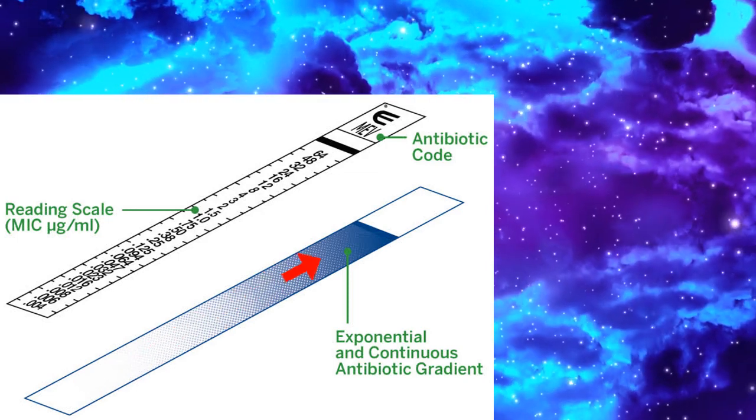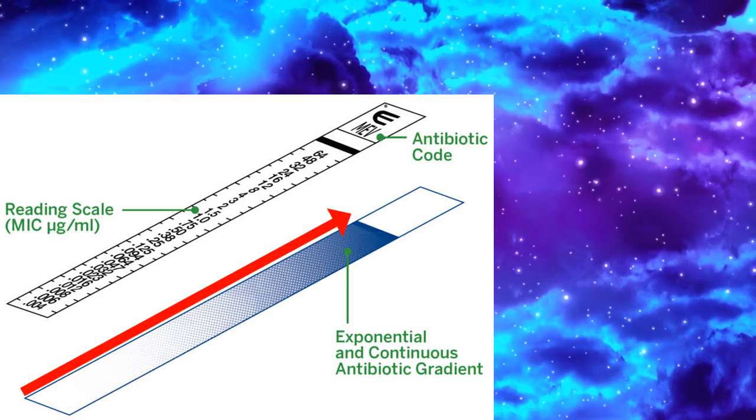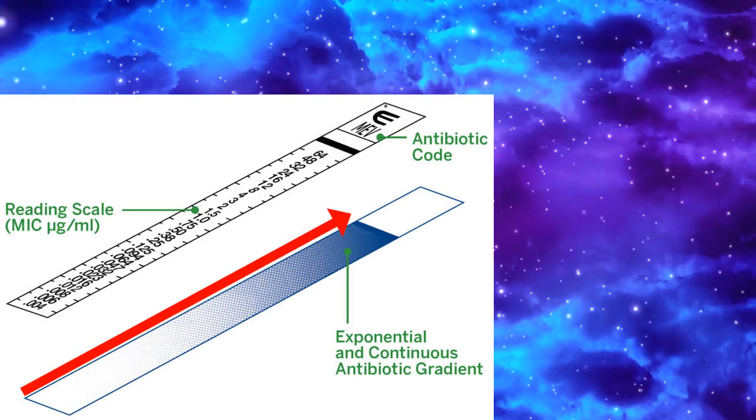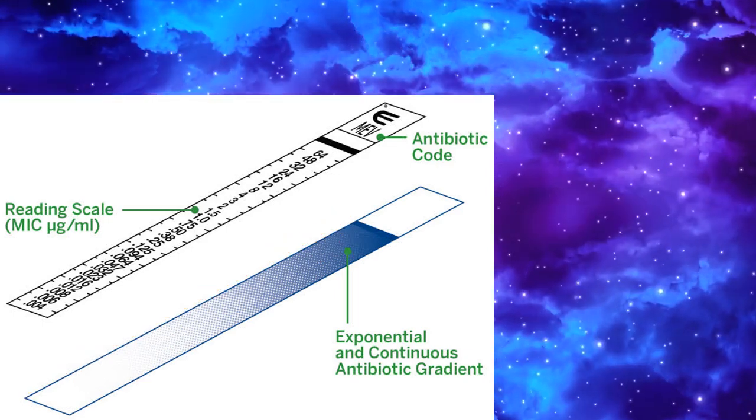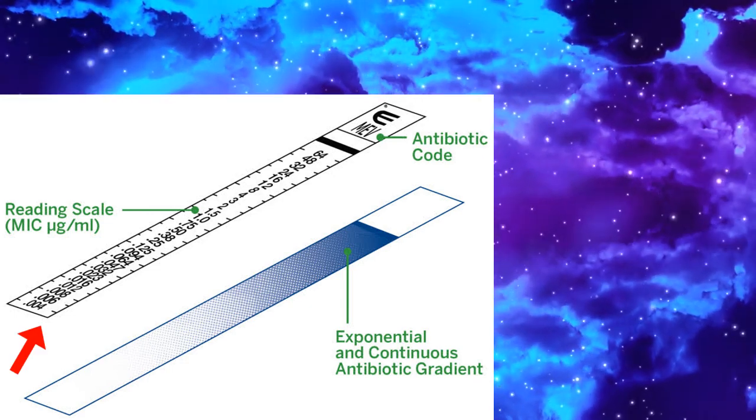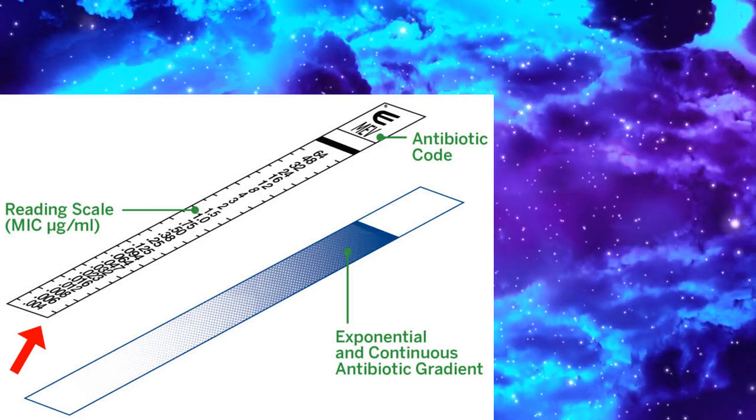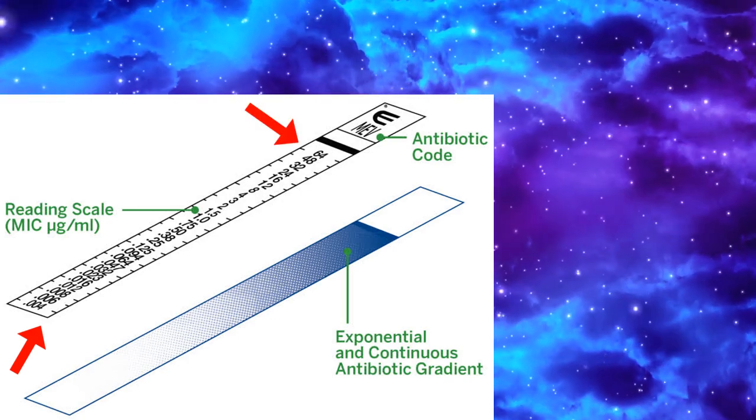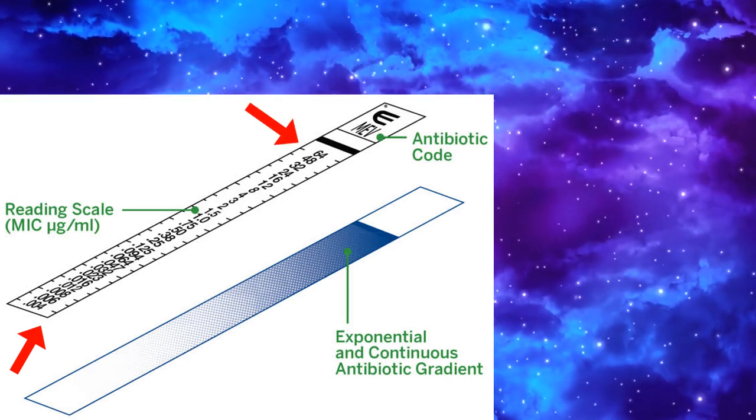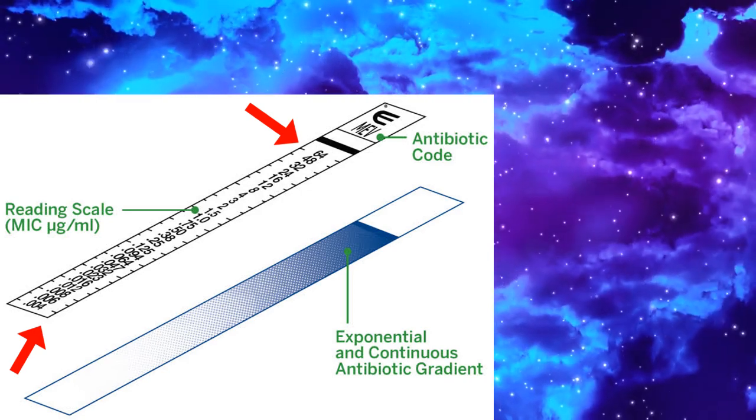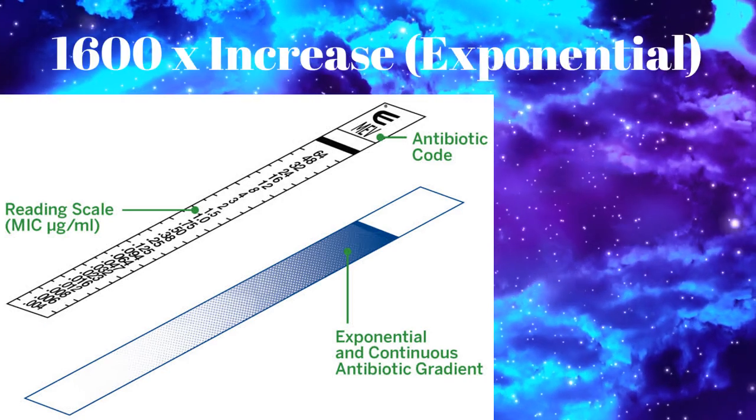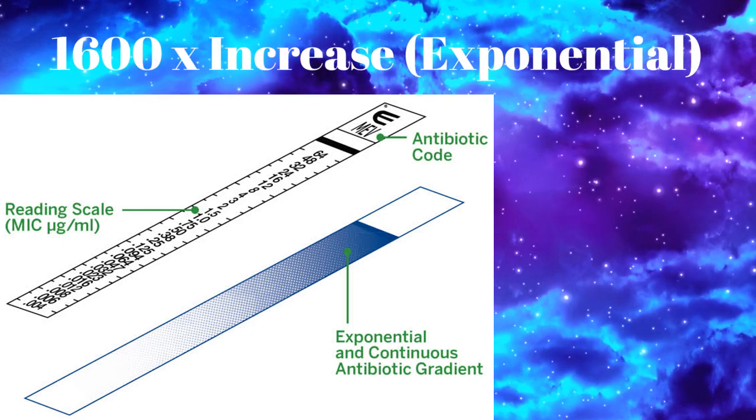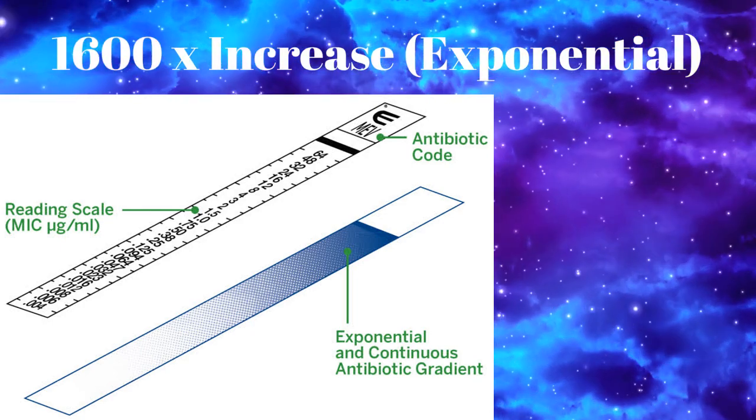By exponential gradient, we mean that the antibiotic is continuously present and it is in the exponential manner with 0.04 microgram per milliliter as the minimum concentration of the antibiotic which rises up to 64 micrograms per milliliter, which is 1,600 times exponential increase as we go toward the higher side of the strip.